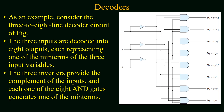As an example, consider the three-to-eight line decoder circuit shown in the figure. For three binary variables we have eight possible input combinations, and each combination corresponds to one minterm. The three inputs are decoded into eight outputs, and each output represents one of the minterms of the three input variables. In the circuit, inverters are used to provide the complement of the inputs, and each of the eight AND gates generates one of the minterms.